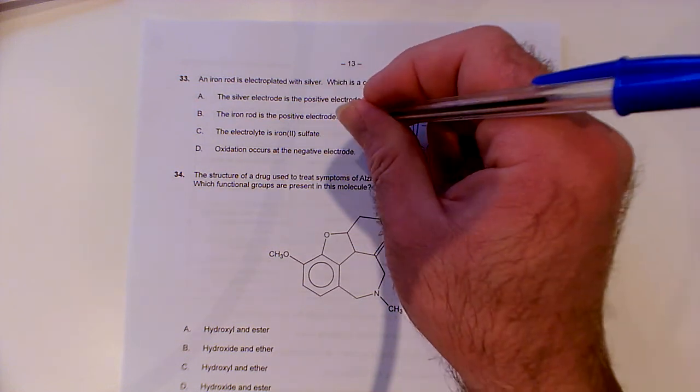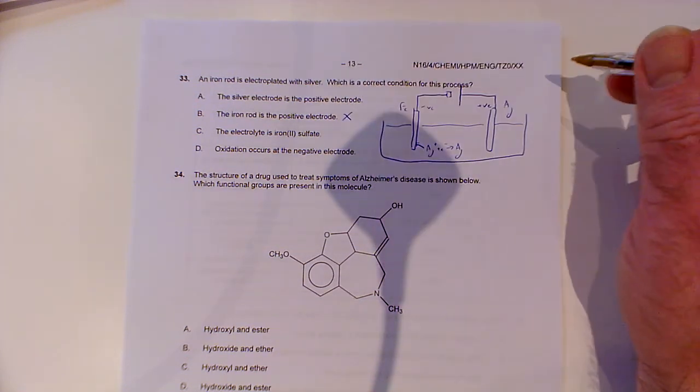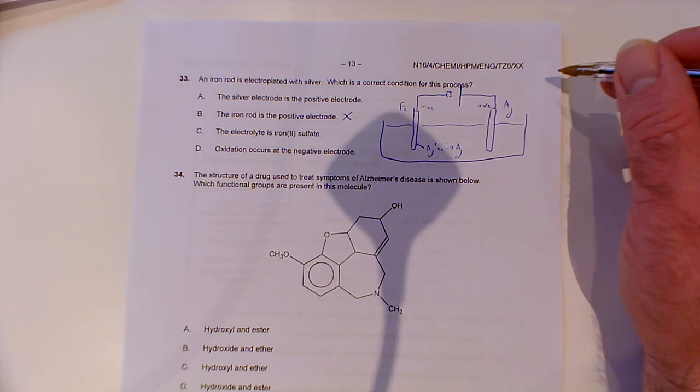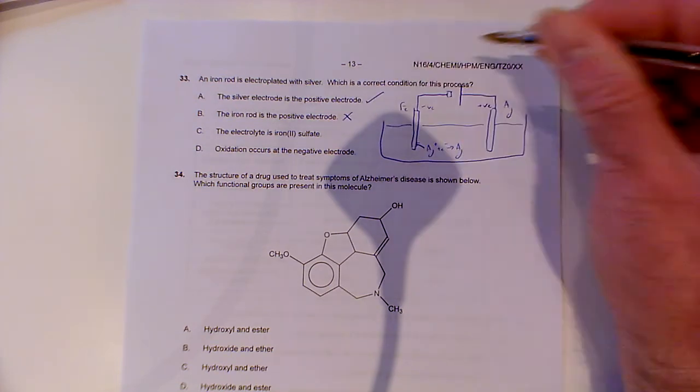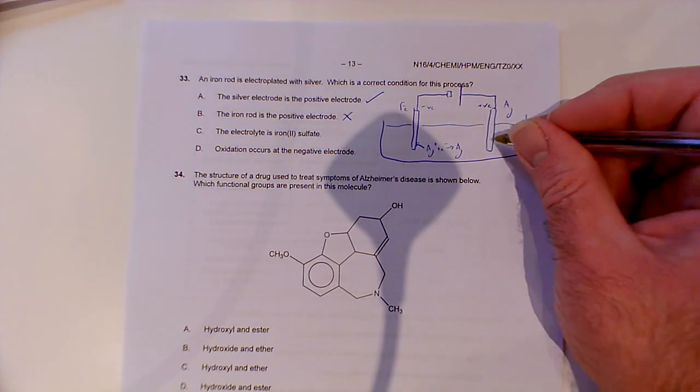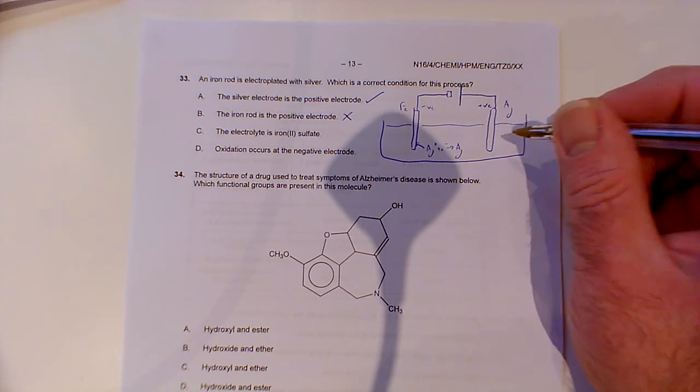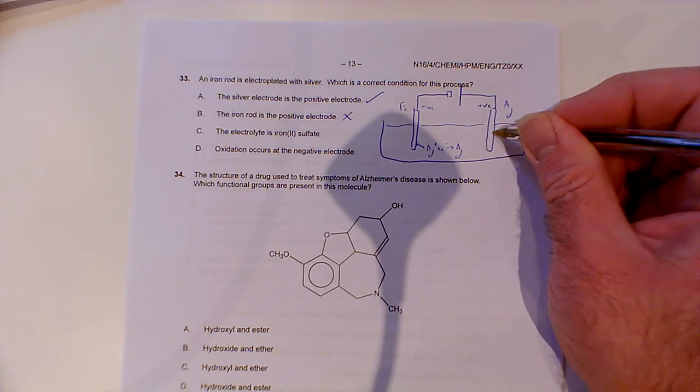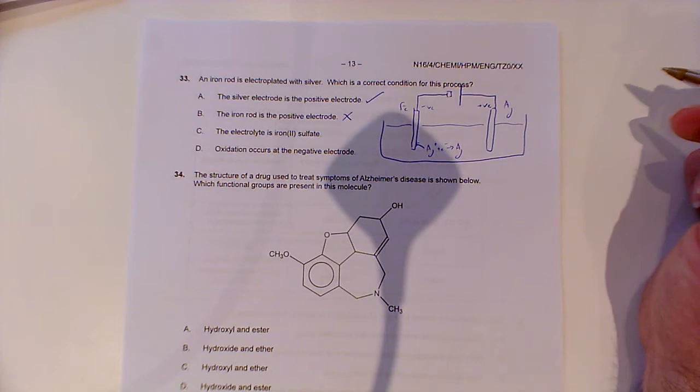The iron one can't be the positive one. So the iron one is the negative one. If the iron one is the negative one, the silver one must be the positive one. Because basically you've then got other things coming to here. I suppose like whatever else is in solution would be discharging at this electrode.